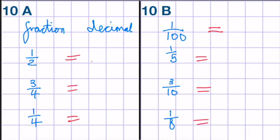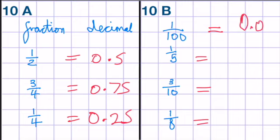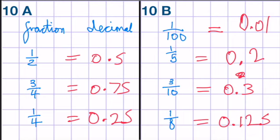For 10A and 10B, I would like you to write the decimal equivalent for each fraction. Press pause, and then we'll do it together. So, half is 0.5. Three quarters, 0.75. One quarter, 0.25. One hundredth is 0.01. One fifth, 0.2. Three tenths, 0.3. And one eighth is 0.125. Now, let me just double check, because I was just distracted. So, that's correct. That's correct. Yes. Yes. Yes. Yes. Yes. Okay.